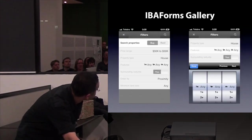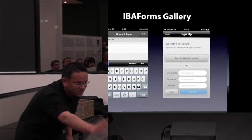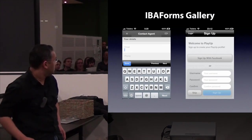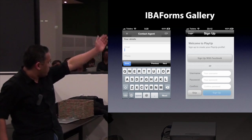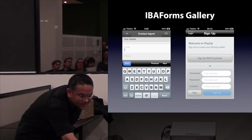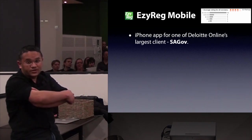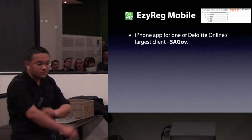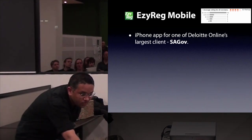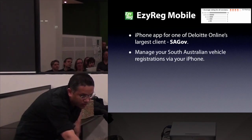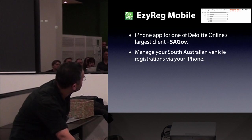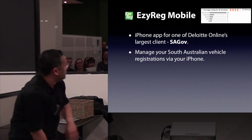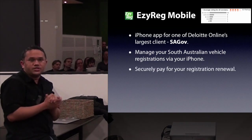So this is the PlayApp app, which also uses the IBA Forms library for the form. The EasyREA app is what I'm going to focus on. It's the iPhone app that we built for Deloitte Online's largest client, SAGov. The idea behind it is to manage your vehicle registrations — basically pay for it via the iPhone app.